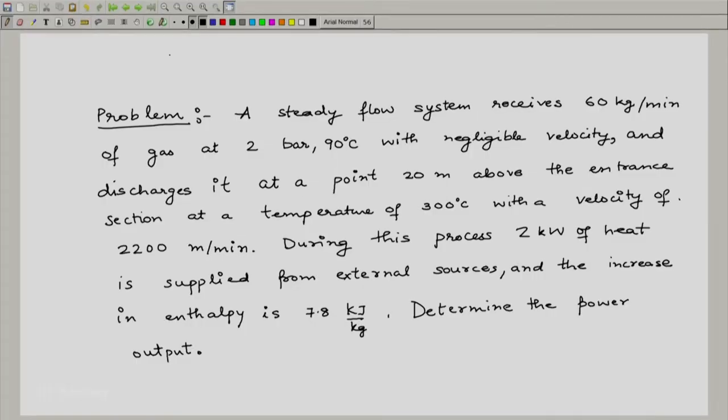A steady flow system receives 60 kilogram per minute of gas at 2 bar 90 degrees centigrade with negligible velocity and discharges it at a point 20 meters above the entrance section at a temperature of 300 degree centigrade with a velocity of 2200 meters per minute. During this process, 2 kilowatt of heat is supplied from external sources and the increase in enthalpy is 7.8 kilo joule per kg. Determine the power output.